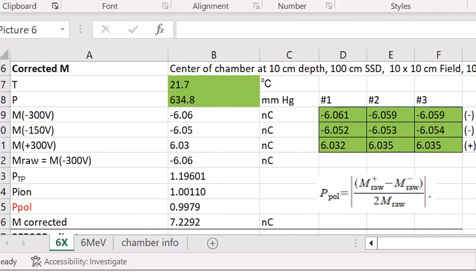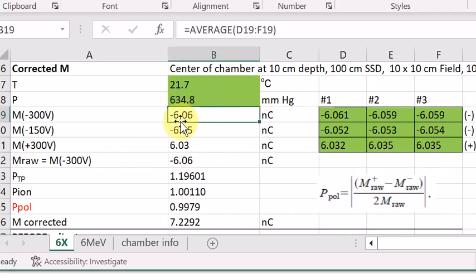So what it means is in our case ADCL calibrated our chamber at negative 300 volts. So our mraw reading is nothing but the reading when the chamber is operated at negative 300 volts. In our case which averaged to the negative 6.06 nanocoulomb when the chamber is biased at negative 300 volts.